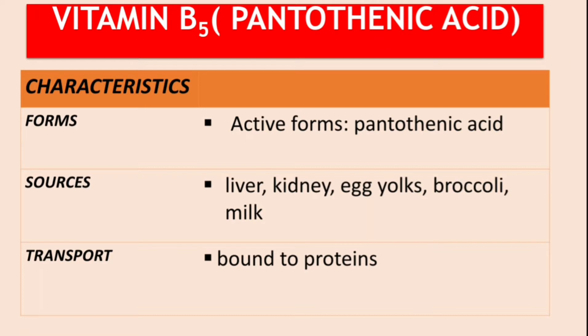These are the characteristics of Vitamin B5. The active form is pantothenic acid, or simply pantothenate. The sources of this vitamin include liver, kidneys, egg yolks, broccoli, milk, and other foods. Regarding transport, this vitamin is transported whilst being bound to proteins like albumin.